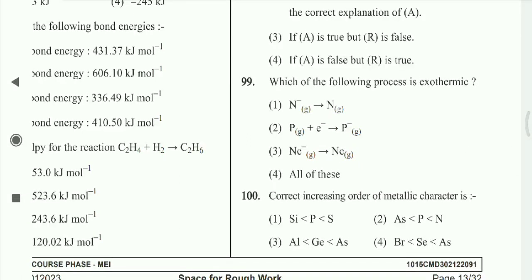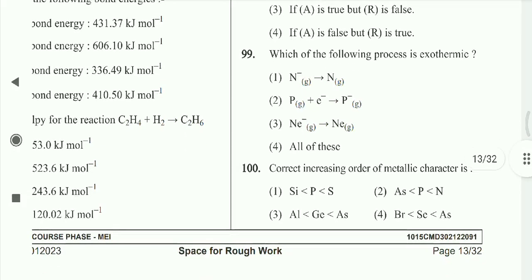Question 99: Which of the following processes are exothermic? All of these — option is correct. Question 100: Correct increasing order of metallic character — argon, selenium, and then bromine. Option 4th is correct.